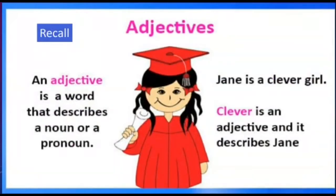Let's recall what we have learnt in our previous class about adjectives. We have learnt that an adjective is a word that describes a noun or a pronoun. For example, if I say 'Jane is a clever girl,' then 'clever' is an adjective and it describes Jane.